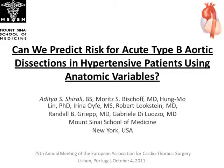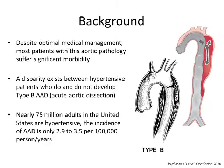I'd like to thank the Society for inviting me to present our work on predicting risk for acute type B aortic dissections. As many of you know, type B acute aortic dissections, or AAD, can be medically managed. However, this aortic pathology is still associated with significant morbidity.